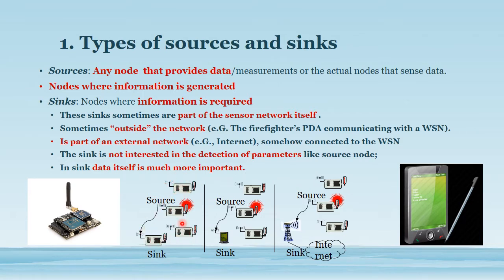In this example, four sensor nodes — four sources — are available in the network, each deployed for a different purpose. For example, one node may be designed for temperature sensing and the second node for vibration sensing. Different types of sources will be available in each wireless sensor network.